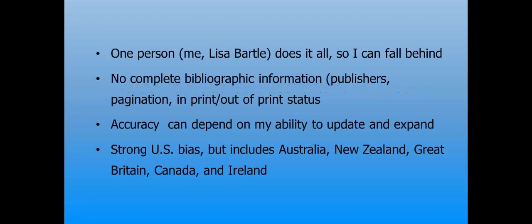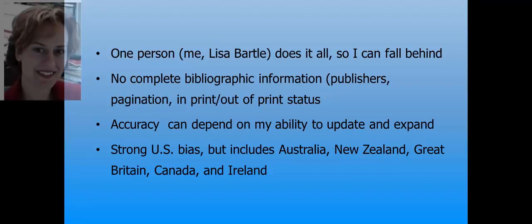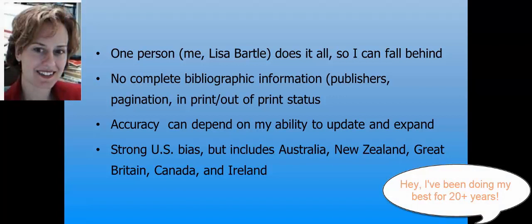What limitations does DAWCL have? The database is a one-woman labor of love, so it cannot provide information that is too intensive. For example, it doesn't contain complete bibliographic details, such as publisher or pagination. Because children's literature is often reprinted, that information is too changeable to maintain. In-print and out-of-print status is also not included. While I try hard to stay current, sometimes the database can fall behind on award announcements, and if the item doesn't have a summary obtained from the Library of Congress or my own reading, it may not be fully indexed, so it may not appear in a search result when it ought to.